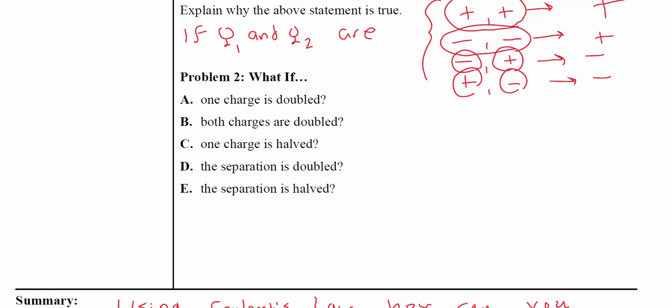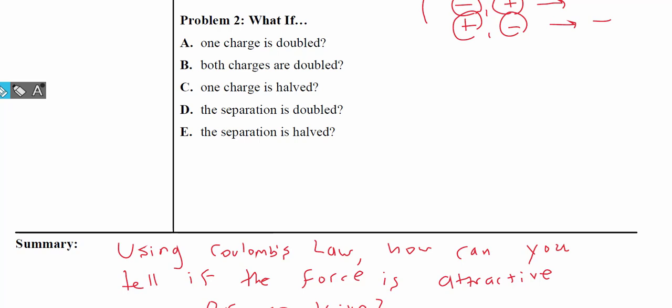I want to ask you a bunch of questions. Problem two, what if? Let's talk about these what ifs. What if one charge is doubled? Recall, we have F is equal to K times Q1 times Q2 over R squared. If I double the first charge, in order to keep this balance, I have to also double the force. So if I double one charge, in other words, if it's twice the size, twice the charge, twice the magnitude, then I get twice the force. I get double the force.